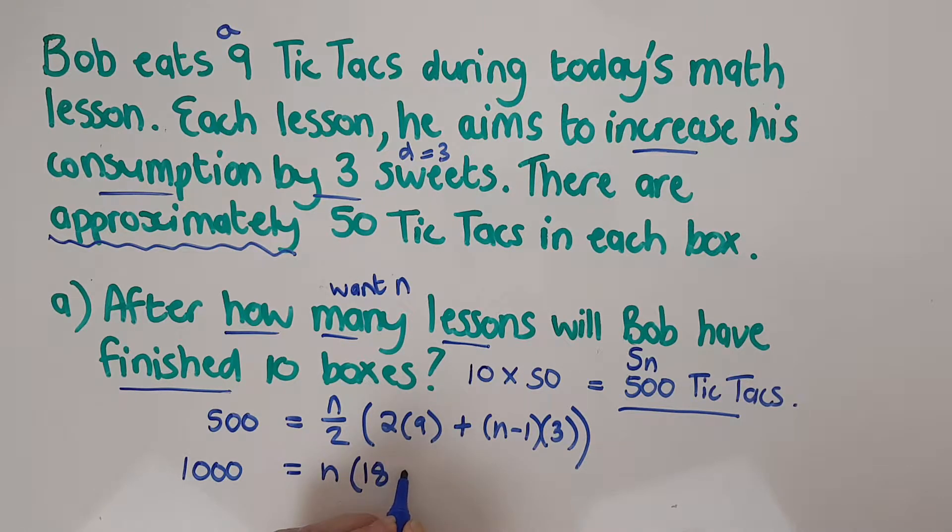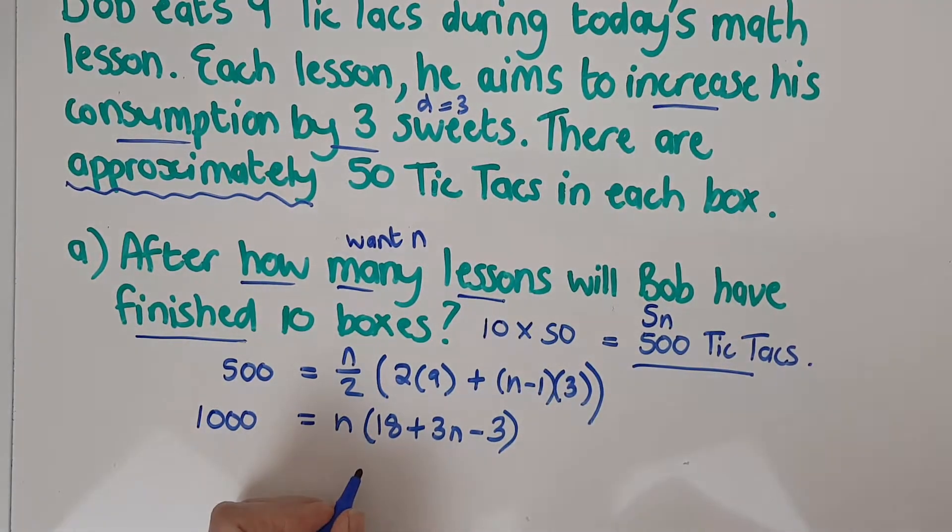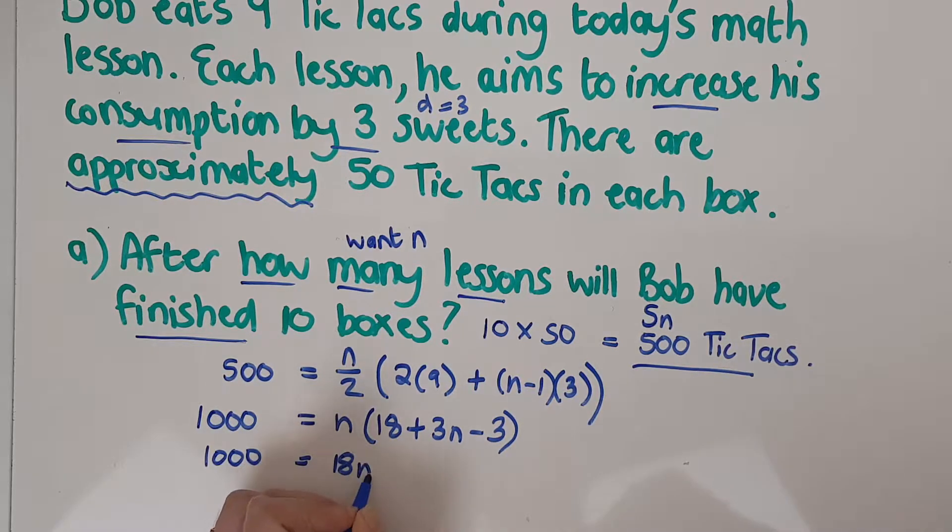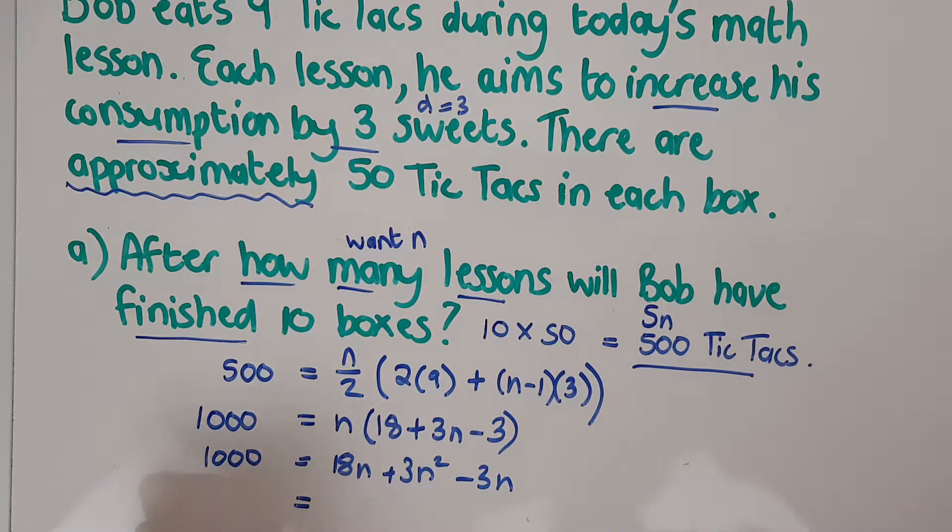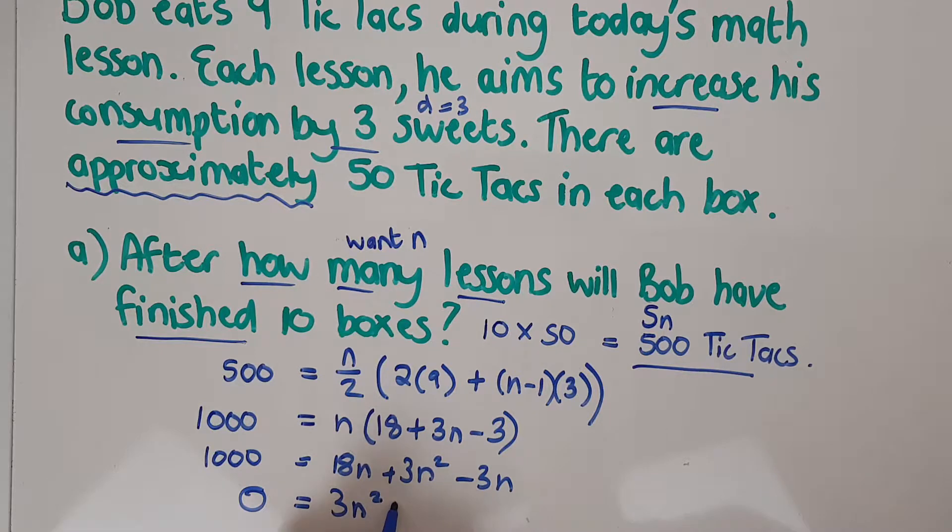That's 18, that's plus three n minus three. So that means I've got a thousand equals 18n plus three n squared minus three n. So if I rewrite all of that to have it all equal to zero, I'm going to end up with zero equals three n squared plus 15n and then minus the thousand.